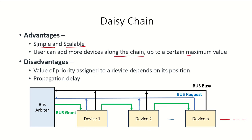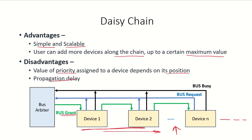The advantage of daisy chaining is that it is a simple and scalable system, as more devices can be added along the chain up to a certain maximum. The disadvantage is that the priority assigned to a device depends on its position — the closer it is to the bus arbiter, the higher its priority. There is also propagation delay, as the grant signal must pass through all earlier devices. Additionally, if any device fails, it may prevent the bus grant signal from being propagated further.